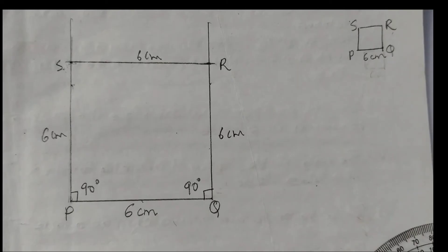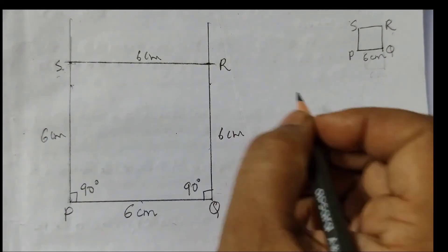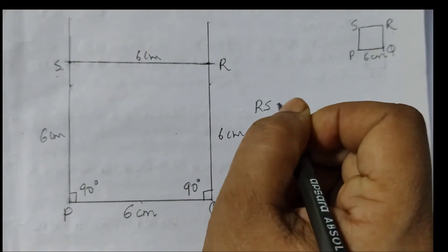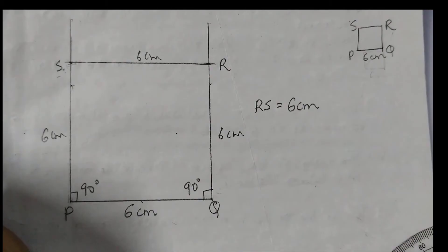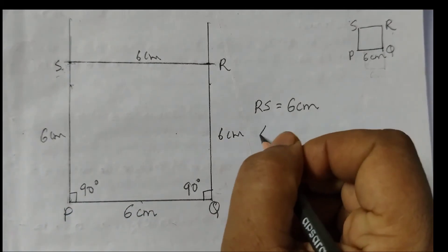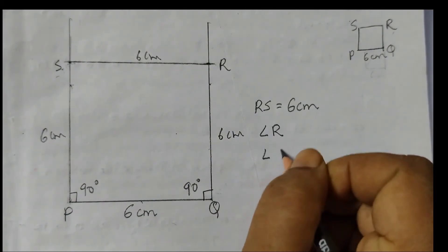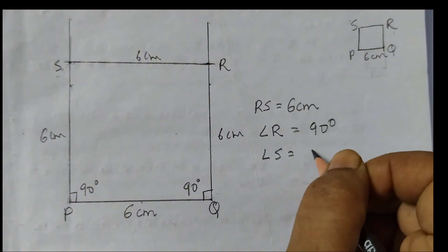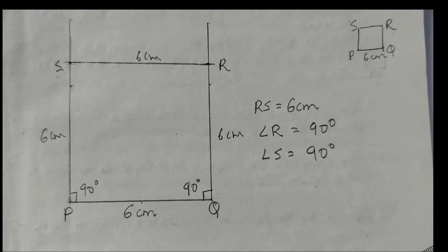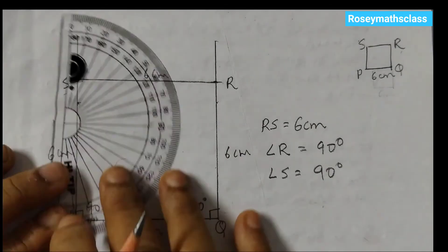After this there are two questions given. Then how long is the side RS? The side length of RS is 6 cm. And what are the measures of angle R and angle S? So both these angles are 90 degrees because in a square all the angles are of 90 degrees. If you want you can measure it.